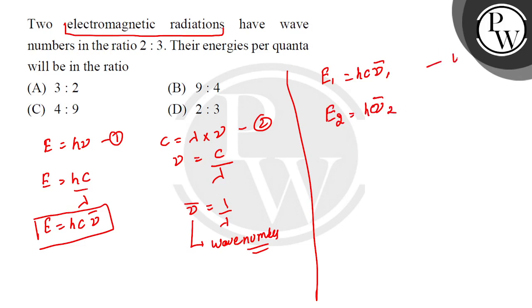If I take equation number 4 and equation number 5, let me divide one by the other. So what will happen? E1 upon E2 is equal to, h and c will cancel, ν̄1 divided by ν̄2.